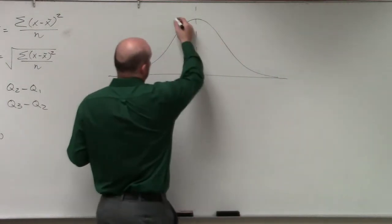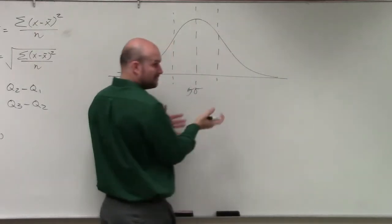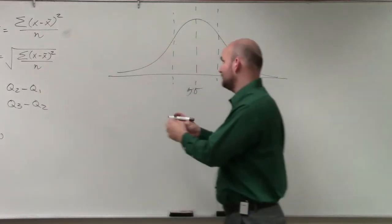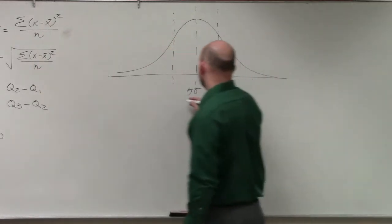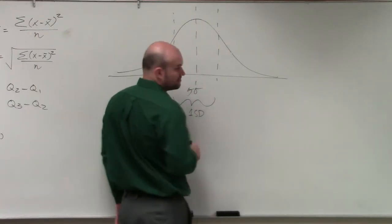On normal distribution, what we have is we have a couple different standard deviations. So remember we learned how to find the standard deviation? So once we find that value, and if we add and subtract that from the mean, we get our first standard deviation. And I'll just label that as 1sd.